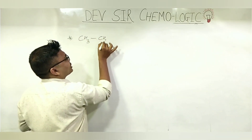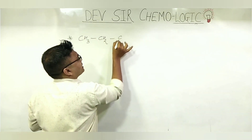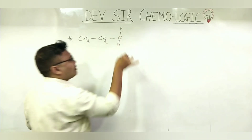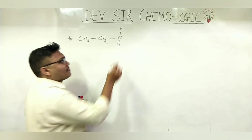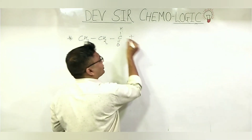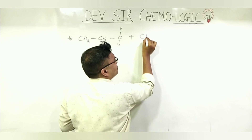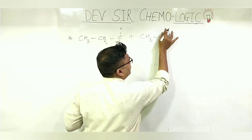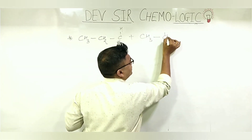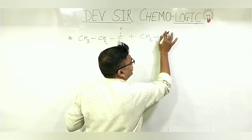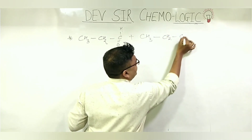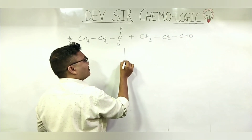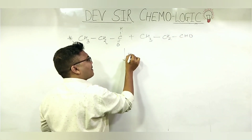New example: CH₃-CH₂-CHO reacts with the same aldehyde — CH₃-CH₂-CHO — in basic medium. Let's solve this example of aldol condensation. Clear?